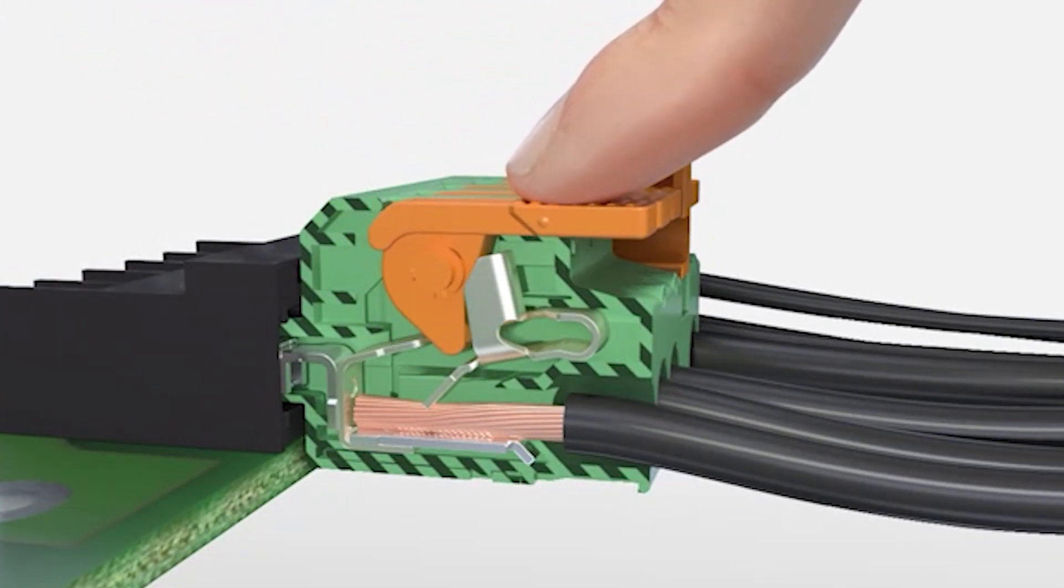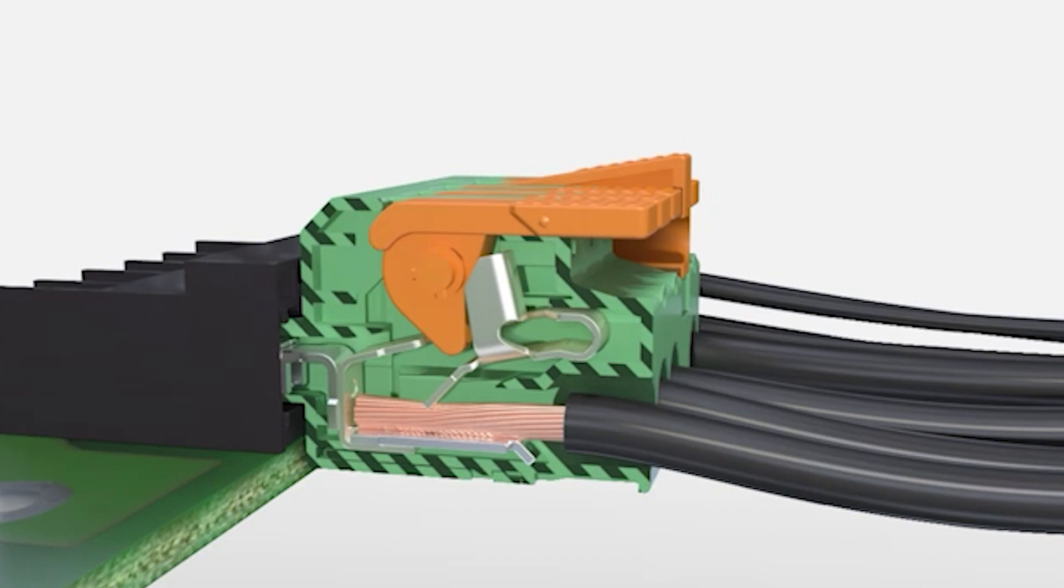Alternatively, the lever can remain closed and the wire can be simply pushed into the connector. Signal connections, for example, are made by pushing the wire directly into the connector.